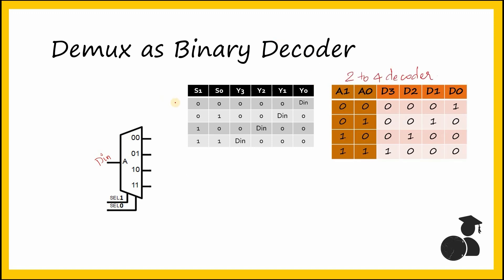You can see from these two tables that A0 and A1 is equivalent to the select lines S0 and S1, and Y0 to Y3 are equivalent to D0 to D3, provided Din here is 1.